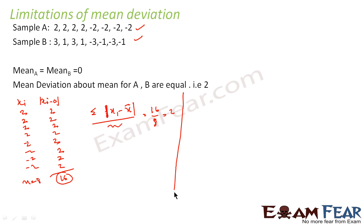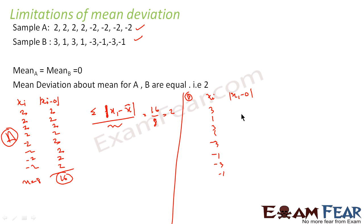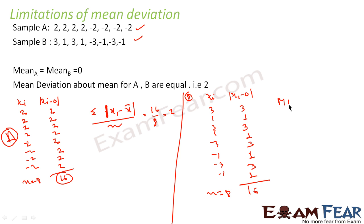Now let's do the same for sample B. The x_i values are: 3, 1, 3, 1, -3, -1, -3, -1. Mean is also 0, so we find |x_i - 0|: |3| = 3, |1| = 1, |3| = 3, |1| = 1, |-3| = 3, |-1| = 1, |-3| = 3, |-1| = 1. Adding these gives 4 + 4 + 4 + 4 = 16. Here n = 8, so MD = σ|x_i - mean| / n = 16 / 8 = 2.